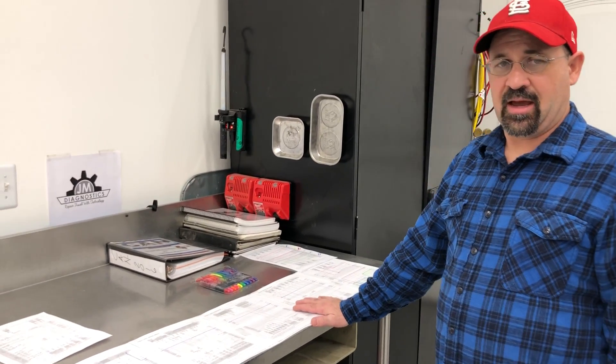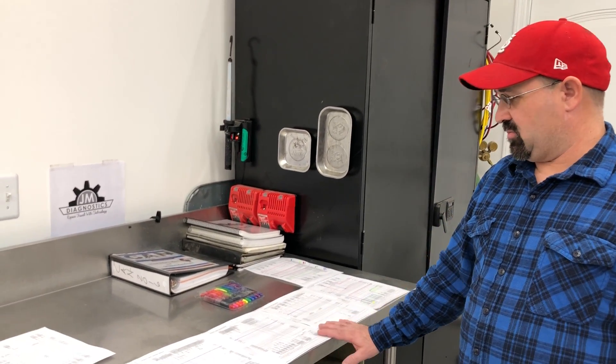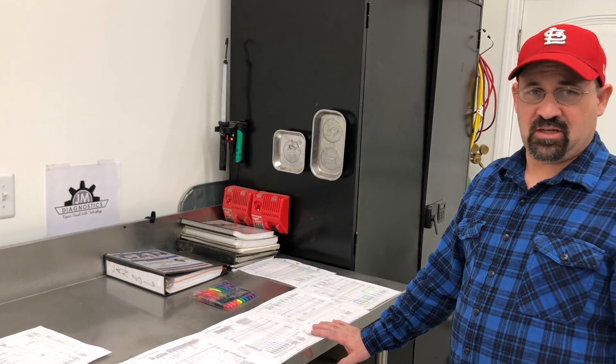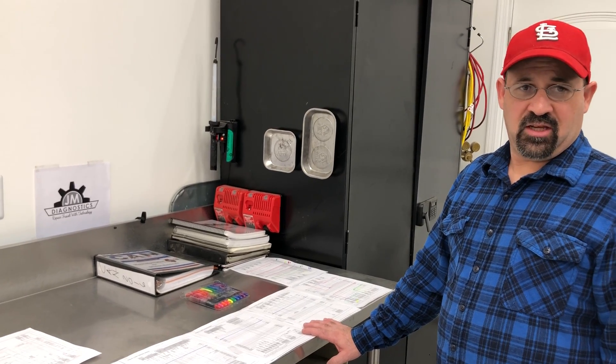So what we do first is get a wiring diagram so I can tell how the system is laid out. This is a brand new Ford, 2017 F-150 with a 2.7 liter.